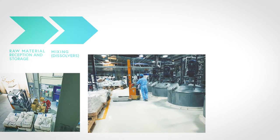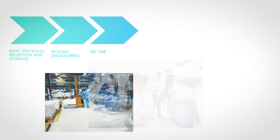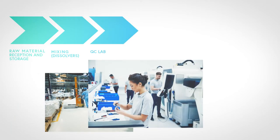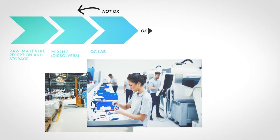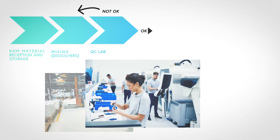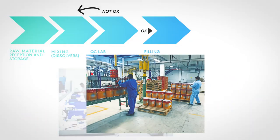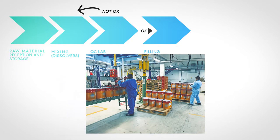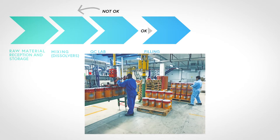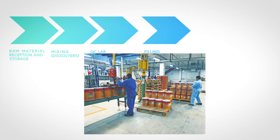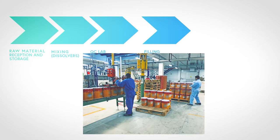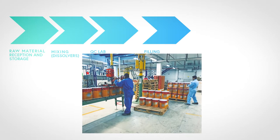Then, raw materials are pulled out, weighed, and prepared for the mixing process. After the mixing, a sample goes to the quality control lab. If the sample is within the specs, the paint batch is released for filling, usually happening on the floor just below the mixing. The filling process can be automatic, semi-automatic, or manual, depending on technology investments, labor costs, and product varieties and volumes.